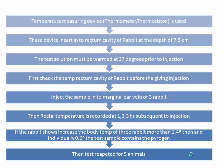After checking temperature at differential time intervals of one, two, and three hours, the final conclusion is made. If the combined temperature rise of three rabbits is more than 1.4°C, it confirms that pyrogen is present in the test solution. Individually, if any rabbit shows a body temperature increase of 0.6°C, that also confirms the presence of pyrogen. If pyrogen is found in the test sample, the test can be repeated on five animals.